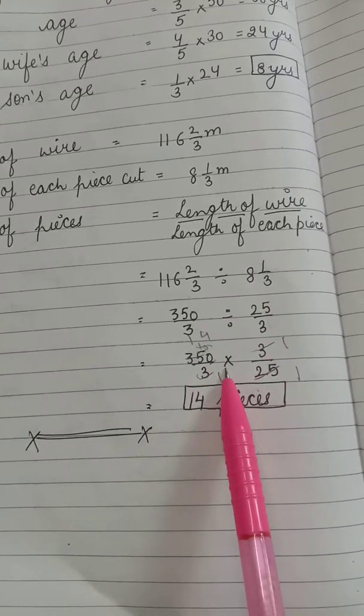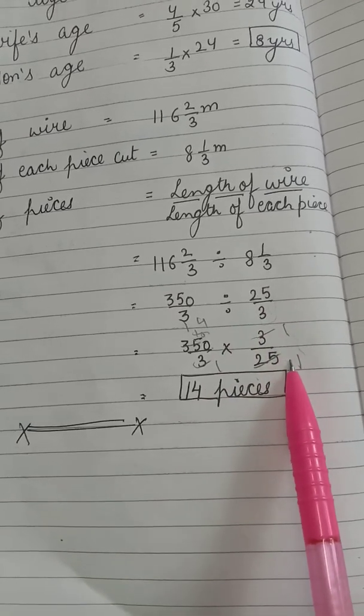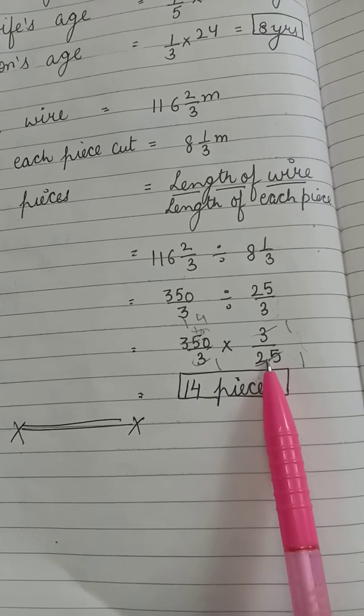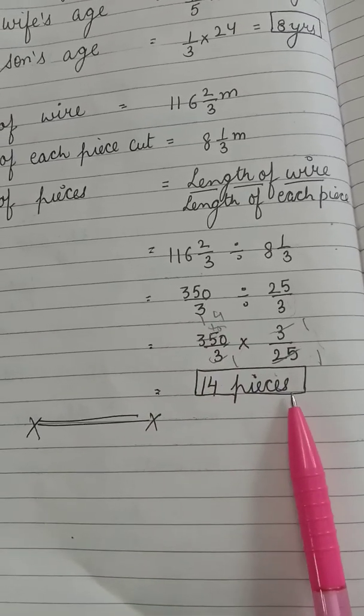Next step, change division into multiplication and reciprocate the fraction which is after the division sign. 25 by 3 will come, 3 upon 25. On reducing, 3 into 3 cut by 5 or directly with 25, that's 14. Therefore, the number of pieces is equal to 14.